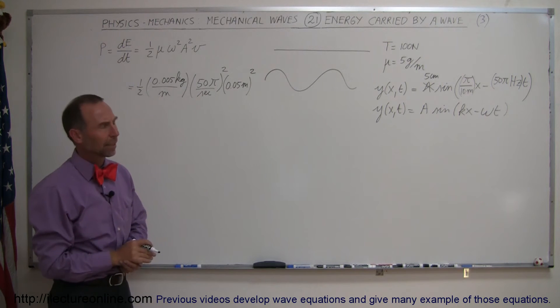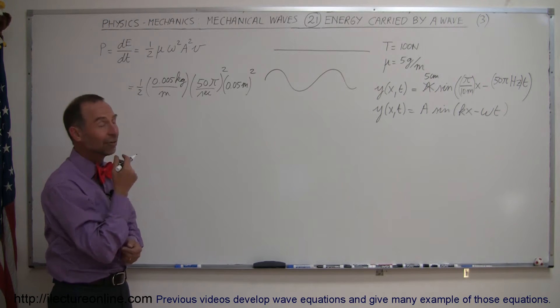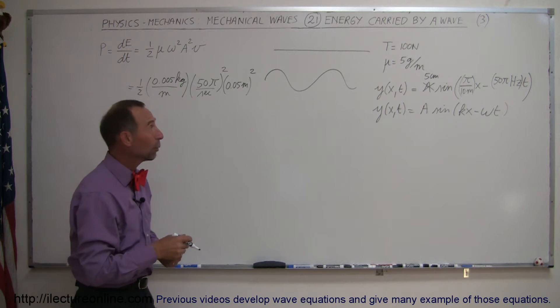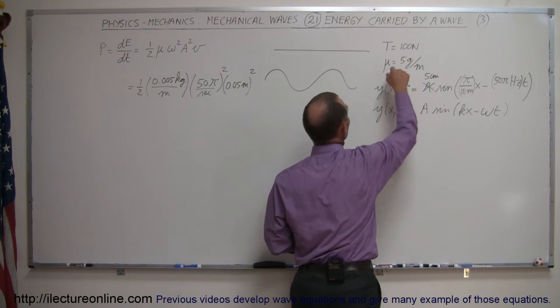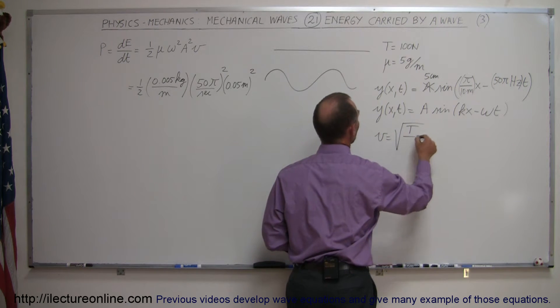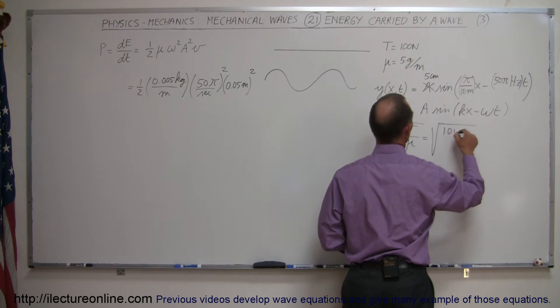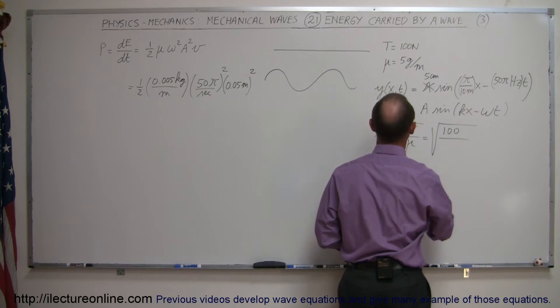And finally, the velocity. Well, we have to figure that out. Velocity, we can either figure it out from the frequency of the wavelength, or we can figure it out from these values right here. We know the velocity is equal to the square root of the tension divided by the mass per unit length, which is equal to the square root of 100 divided by mu.